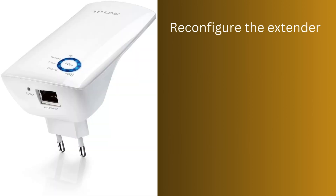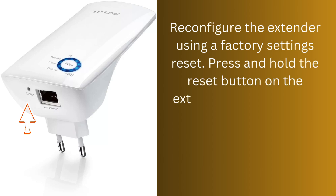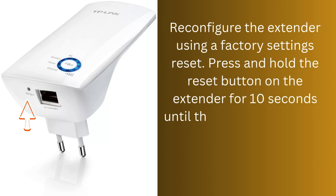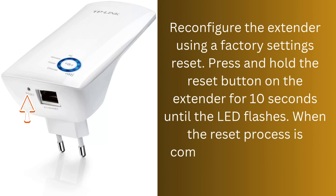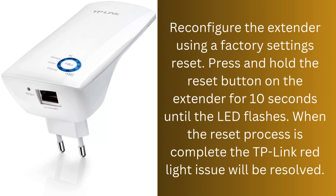Reconfigure the extender using a factory settings reset. Press and hold the reset button on the extender for 10 seconds until the LED flashes. When the reset process is complete, the TP-Link red light issue will be resolved.